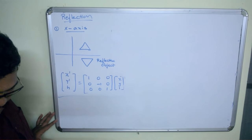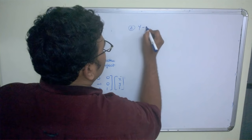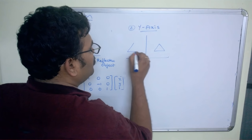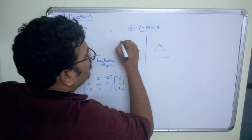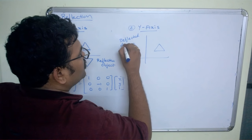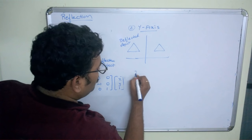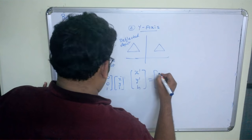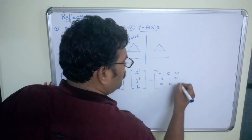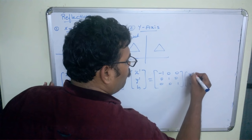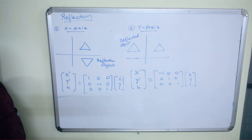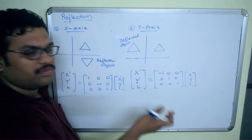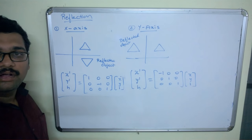For reflection towards the y-axis: if the triangle is on the right side of the y-axis, the mirror image appears on the left. The homogeneous matrix representation is: x-dash, y-dash, h = [−1, 0, 0 / 0, 1, 0 / 0, 0, 1] × [x, y, 1]. This is the formula for reflection around the y-axis.